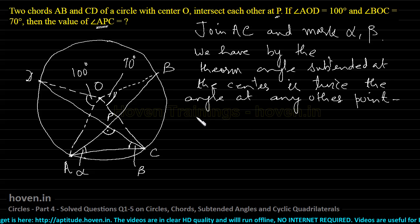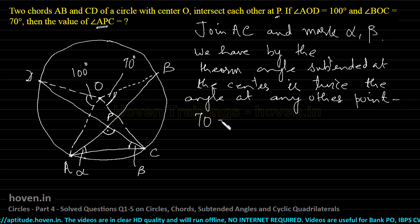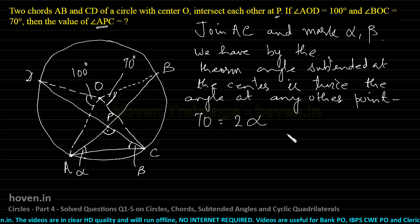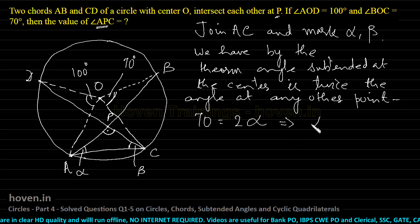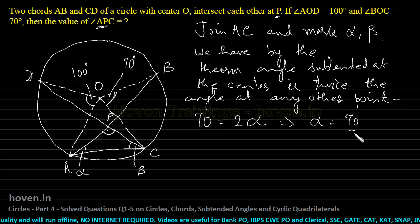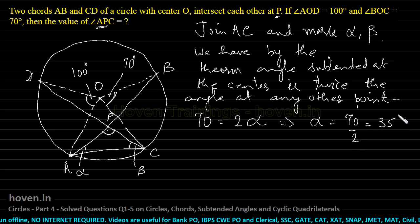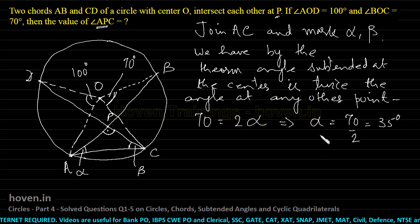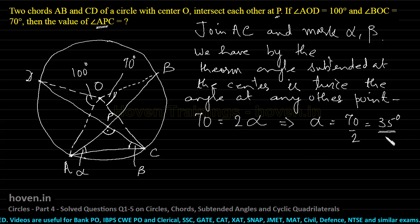By the theorem, the angle subtended at the center is twice the angle subtended at any other point on the periphery. So, 70 should be 2 times alpha, which immediately implies that alpha should be equal to 70 divided by 2, equal to 35 degrees. So, I have obtained the value of alpha.